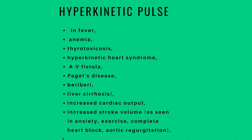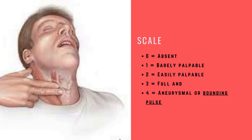A hyperkinetic pulse indicates high pulse pressure — a bounding pulse. This is associated with low peripheral resistance as seen in fever, anemia, thyrotoxicosis, hyperkinetic heart syndrome, AV fistula, Paget's disease, beriberi, liver cirrhosis, increased cardiac output, and increased stroke volume. Either hypokinetic or hyperkinetic can be reported by scale: 0 is absent; 1+ is barely palpable; 2+ is easily palpable; 3+ is full; and 4+ or more is aneurysmal or bounding pulse.